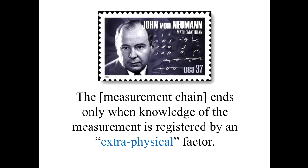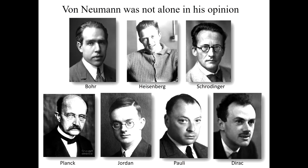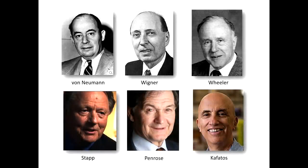John von Neumann said that the measurement chain ends only when knowledge of the measurement is registered by what he called an extra-physical factor. In other words, you can't use another physical system to end the chain because it just becomes more quantum. So you need something extra-physical by which he meant consciousness. And he wasn't alone in his opinion. Almost all of the founders of quantum mechanics said something like this in various ways, going all the way back to Bohr and even Planck. They all said something like this, and this continues to the present day. This is today a minority opinion within physics, but nevertheless it has a pretty prominent background.